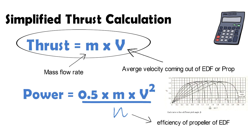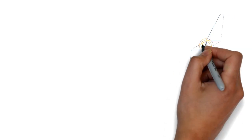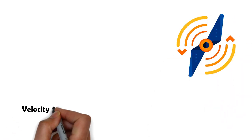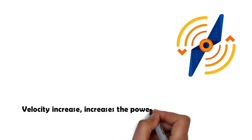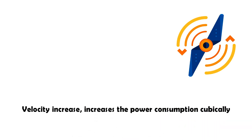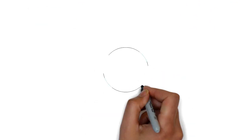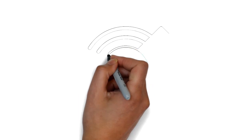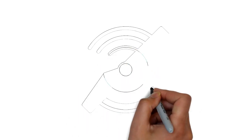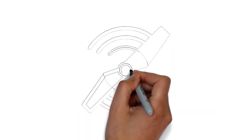The above formulas suggest that if we have to increase the thrust, we can either do it by increasing the mass flow rate or by increasing the velocity. If we however take the latter approach of increasing the velocity, then the power consumption increases dramatically. It increases cubically to be particular. So having a low mass flow rate and a high outflow velocity is not the most efficient design approach, particularly when we are looking to make the most out of our battery.